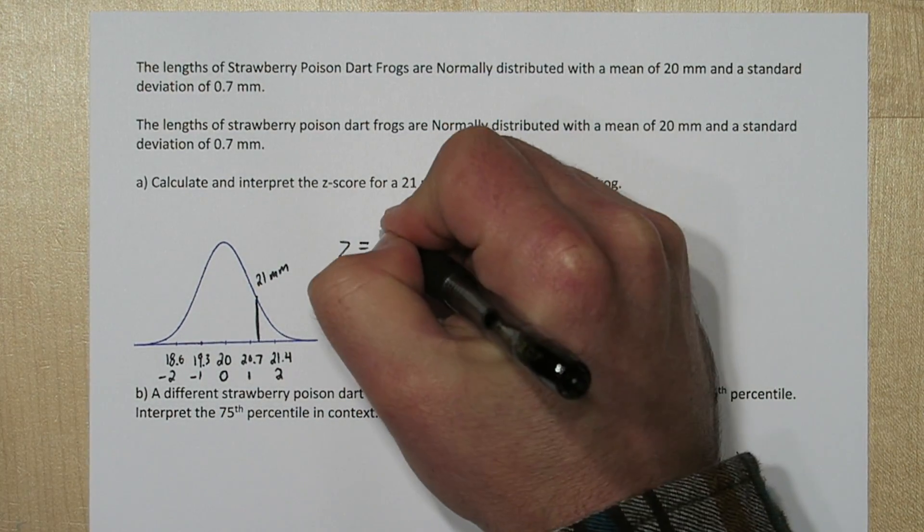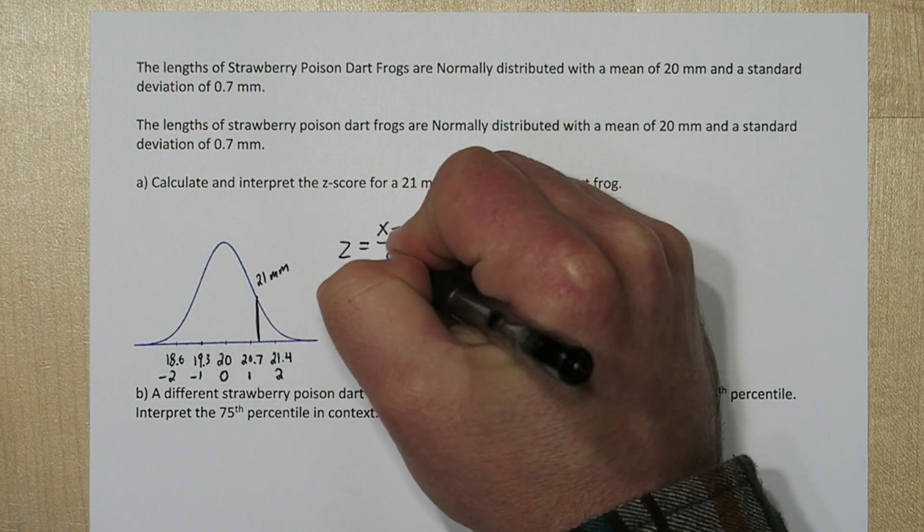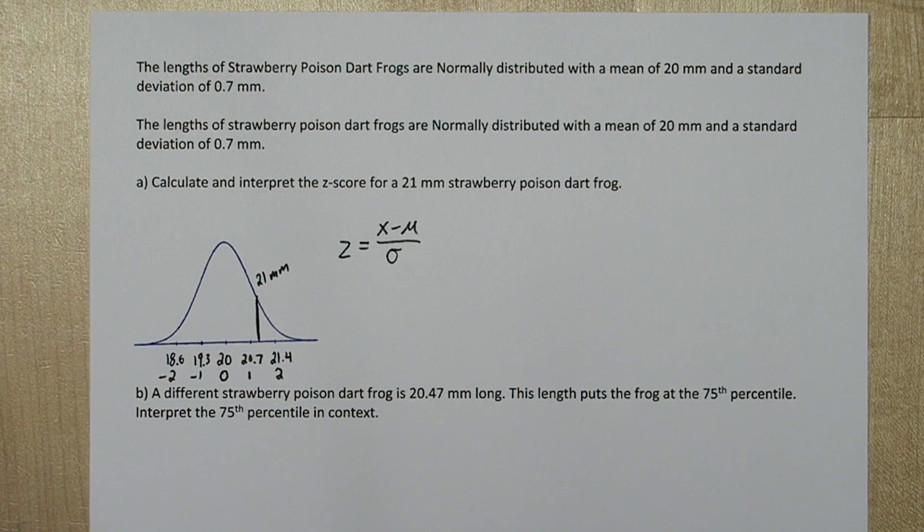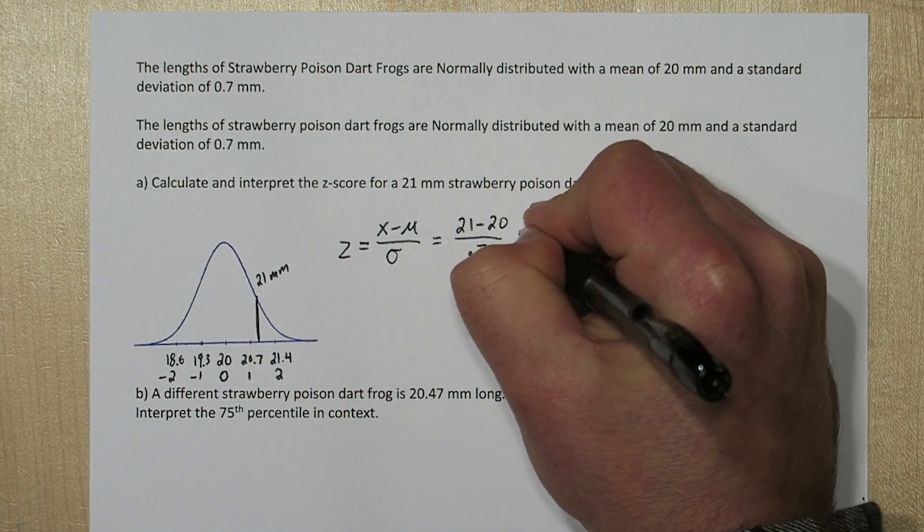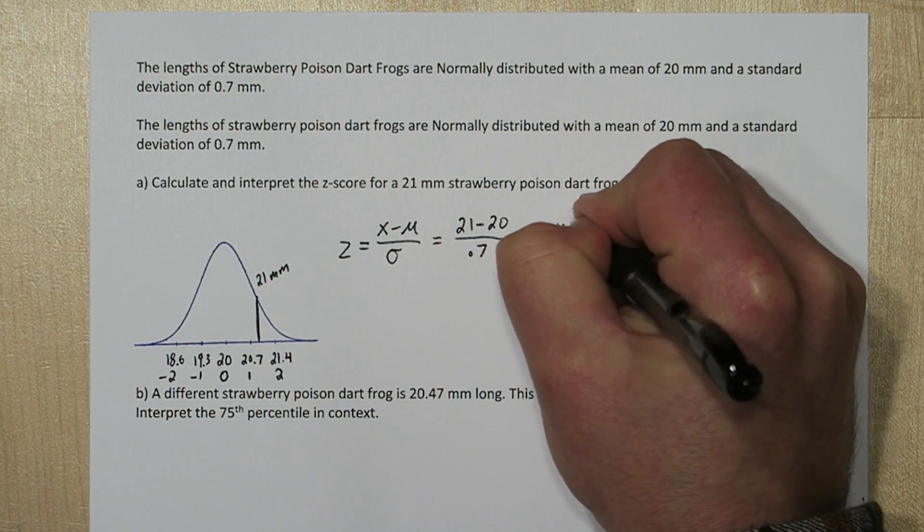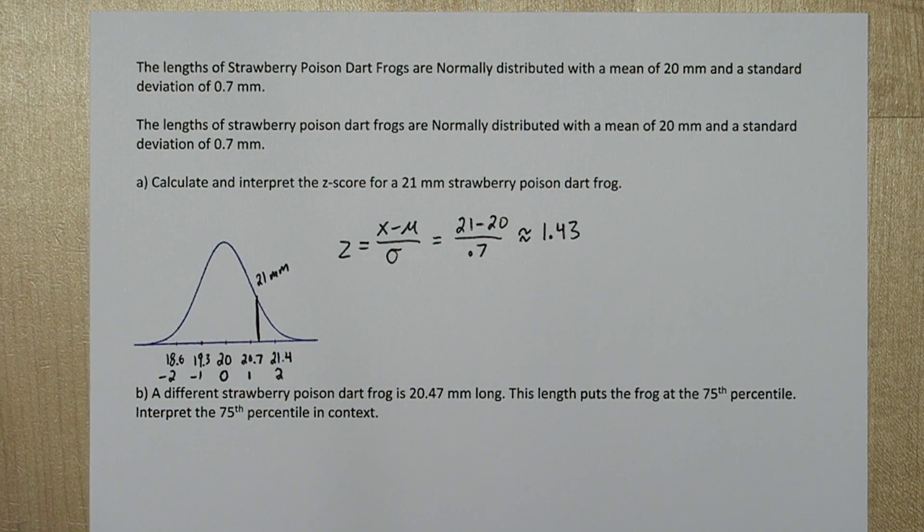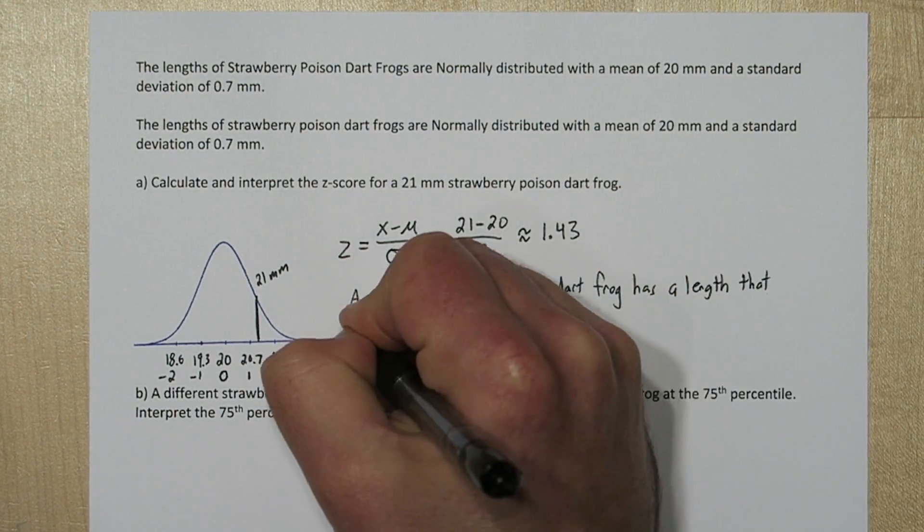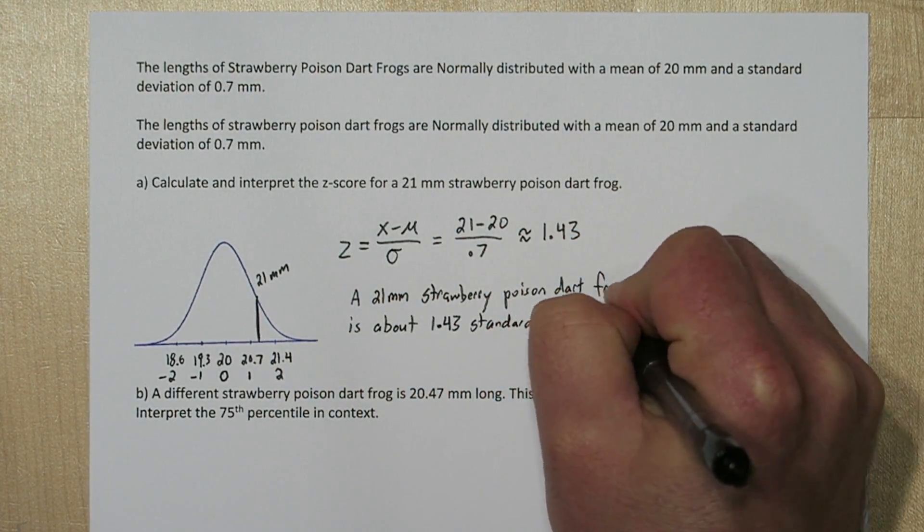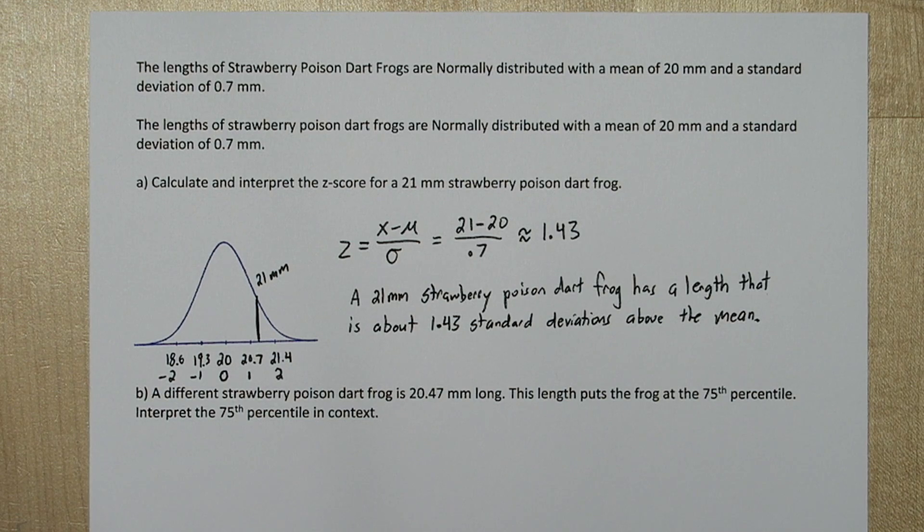Let's calculate it. So to calculate a z-score we take x, our value of interest, subtract the mean, and divide that by the standard deviation. So in this case 21 minus 20 divided by 0.7 is approximately equal to 1.43. So to interpret that we'll say a 21 millimeter strawberry poison dart frog has a length that is about 1.43 standard deviations above the mean.